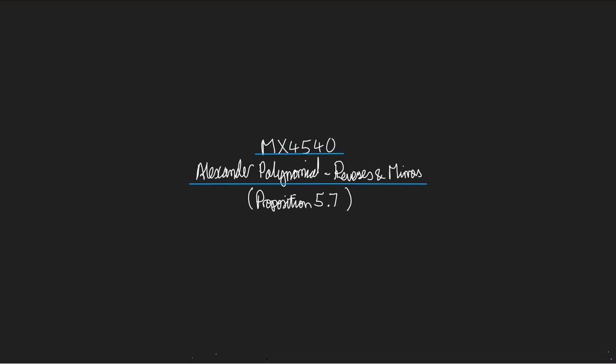Welcome to a mini lecture about the Alexander polynomial and how it behaves with respect to reverses and mirrors, and also its connection with the determinant. This is a mini lecture trying to explain how proposition 5.7 works.